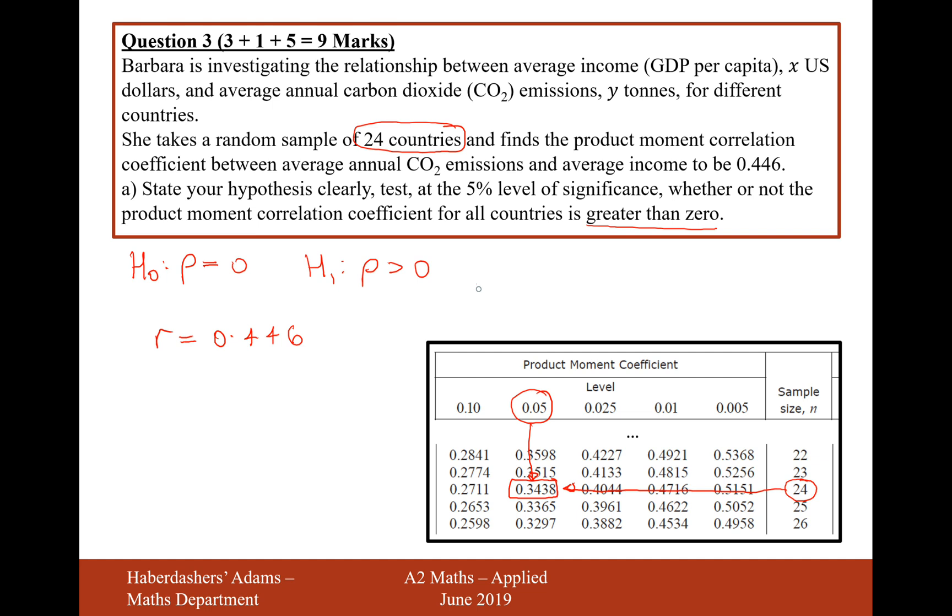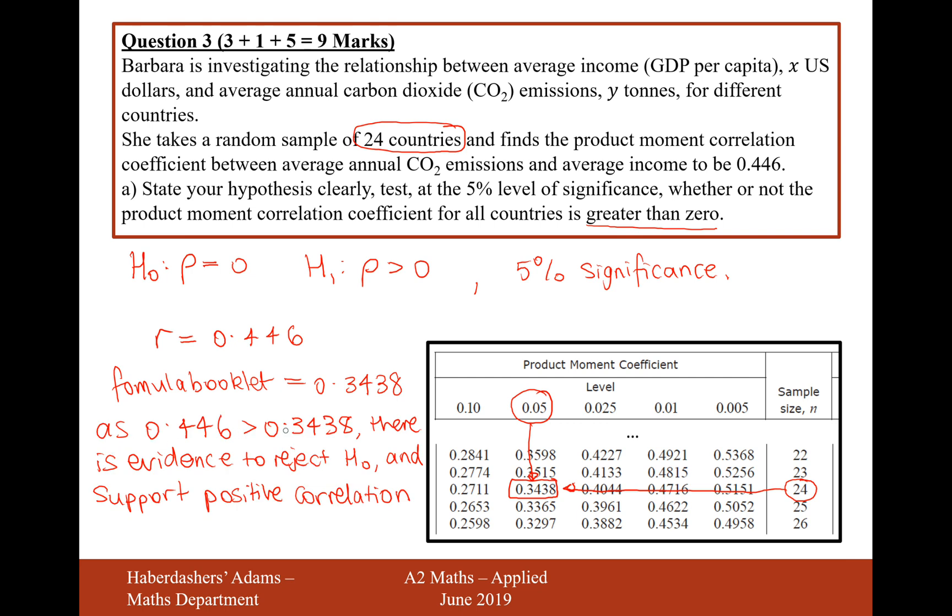So on the formula booklet, let's just write 5% significance as well to really set out and formalize our answer. On the formula booklet table the value is 0.3438. So as 0.446 is greater than 0.3438, there is evidence to reject H0 and support positive correlation. So there we are, that's our answer for part A, just a hypothesis test using the formula booklet.